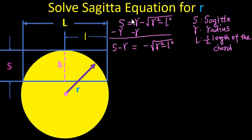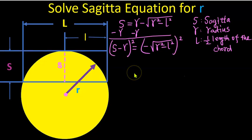Next we're going to square both sides of the equation. After squaring the left hand side, we are going to get s squared minus 2sr plus r squared. Squaring the right hand side, we are going to get r squared minus l squared.